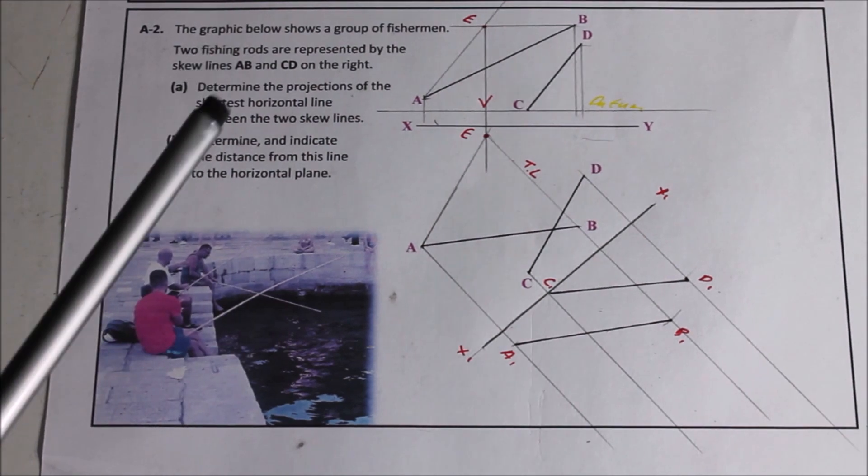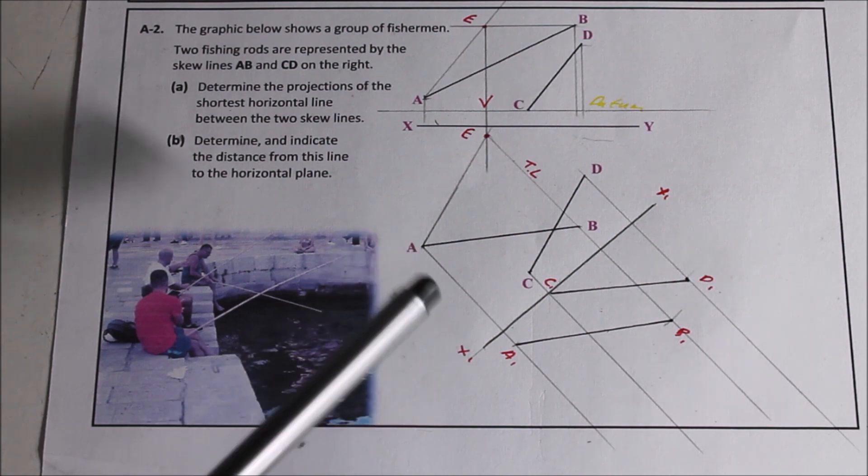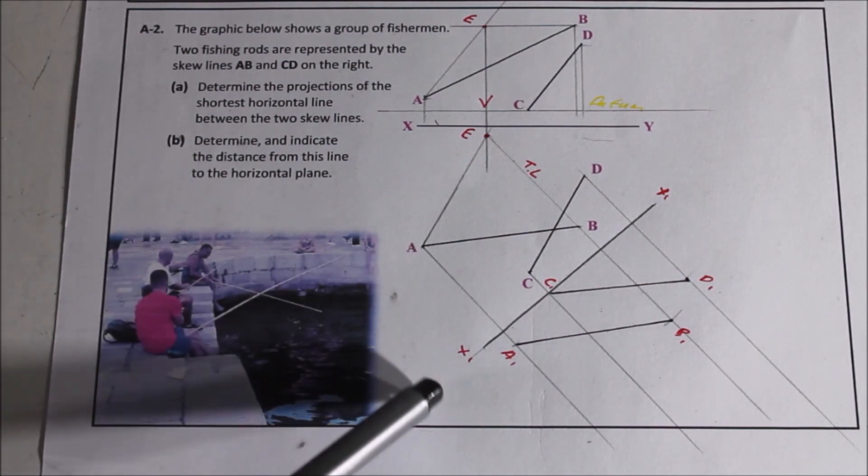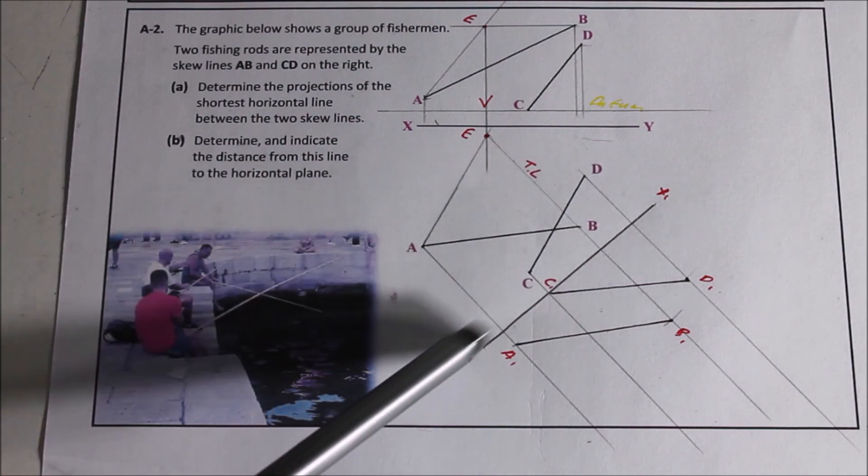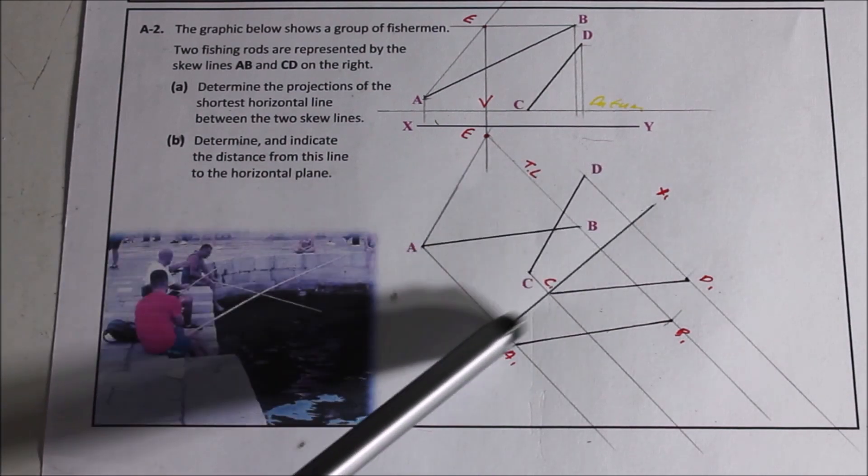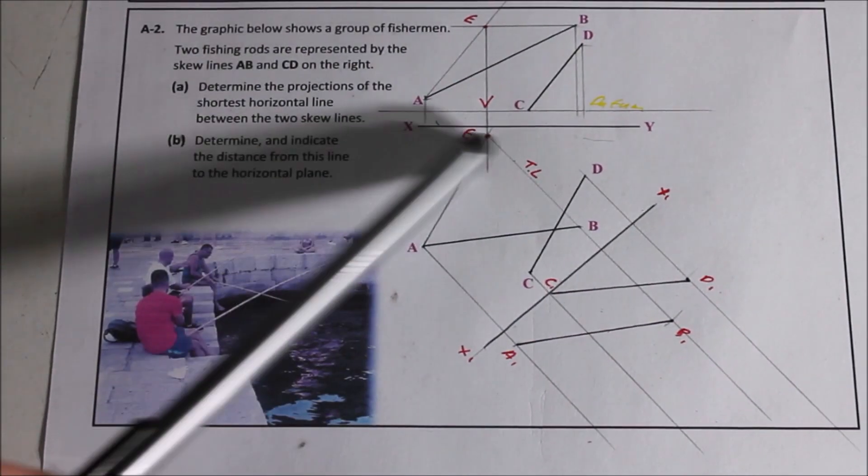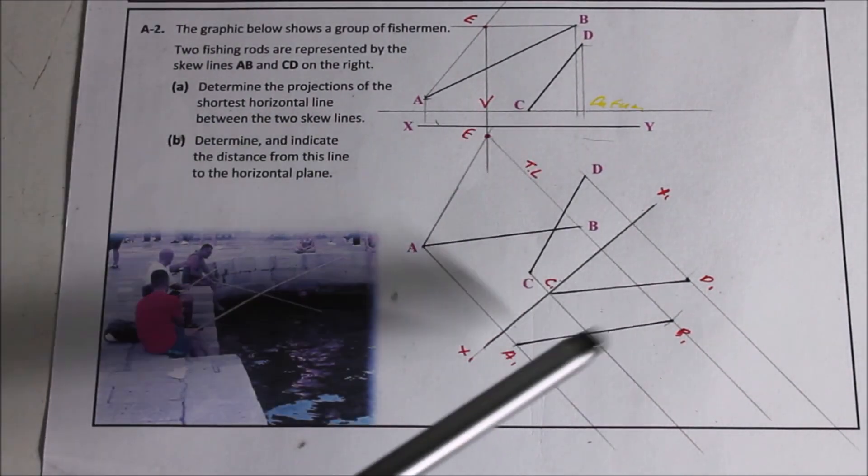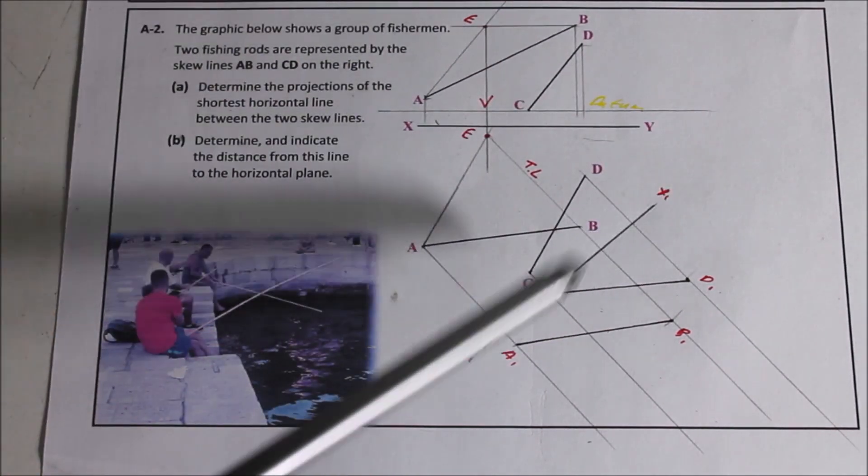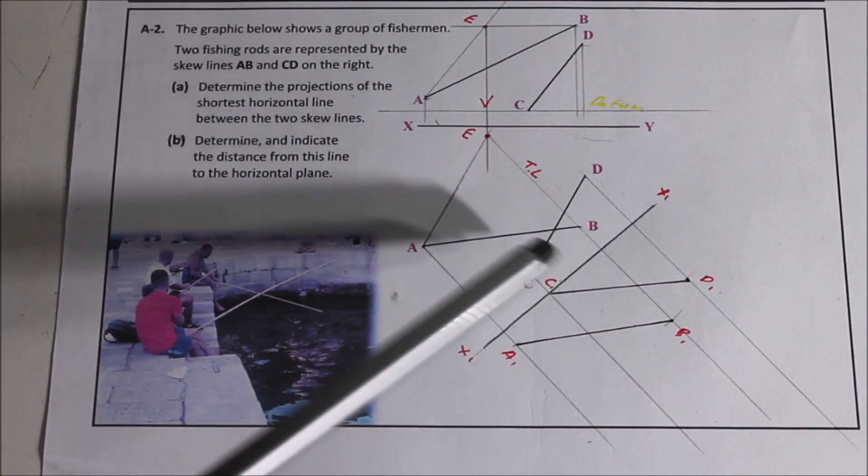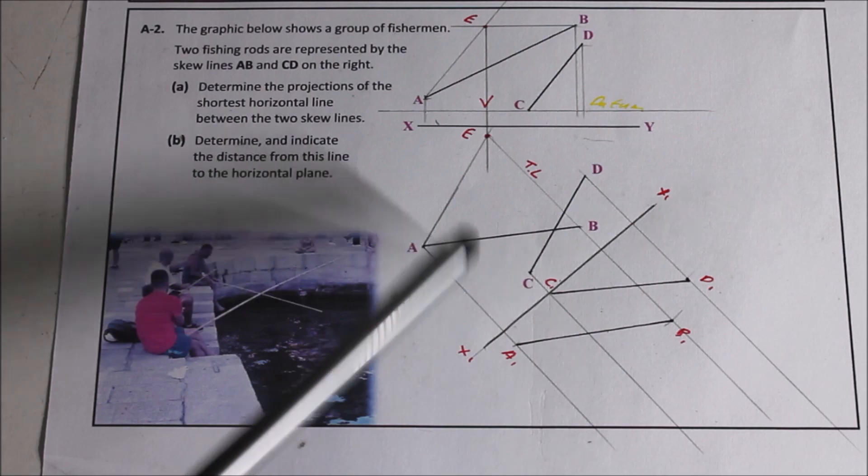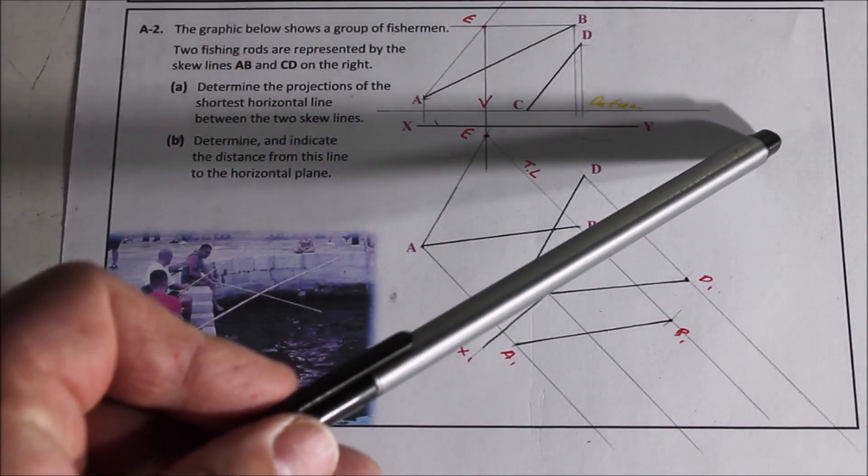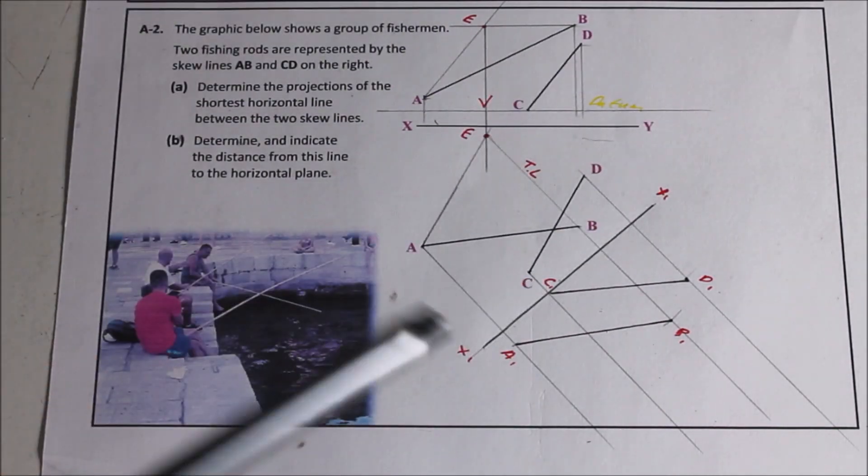So they're asking for the shortest horizontal line. So for it to be horizontal, our next auxiliary view has to be projected at the same angle as the X1Y1. So we're using that because technically that represents the horizontal plane here in our orthographic views. So project all your points up here, same angle as the X1Y1 line. Find your heights back from the X1Y1 to the plan. You should see your two skew lines cross given the shortest possible distance. I would project that back then through all our views.